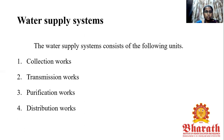The fourth unit of work is the distribution works. The treated and purified water is finally sent to the consumers through a suitable distribution network. The water may flow in the water supply pipes under pressure. The pure water is normally stored in an elevated service reservoir and then supplied to the public. More than one reservoir may be needed in large systems, and a proper distribution network is selected before supplying the treated water to the public.